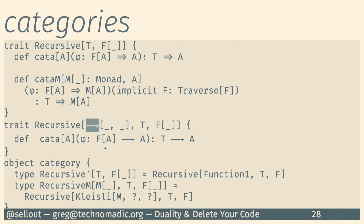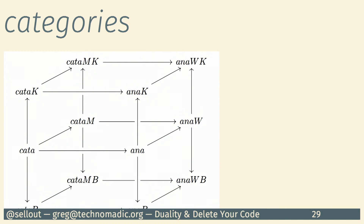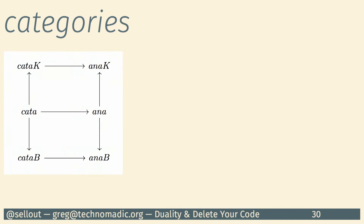We've now collapsed that whole dimension — we had those monadic variants and comonadic variants — and we have a nice smaller thing. We still have all the generality, but because we've moved these things to type parameters, we don't have to implement a billion different things. Our library is getting much more reasonable and manageable again.